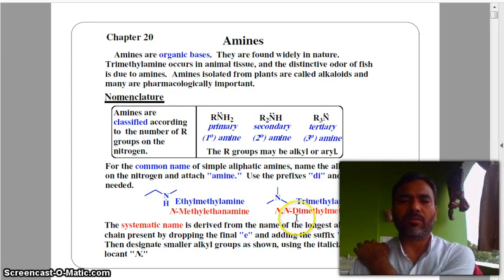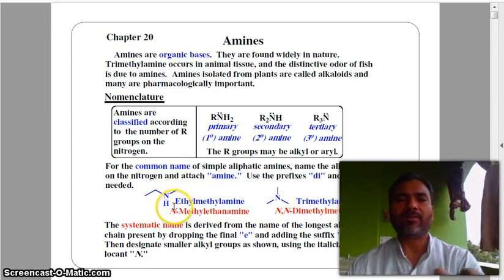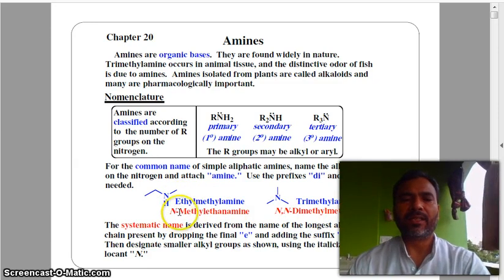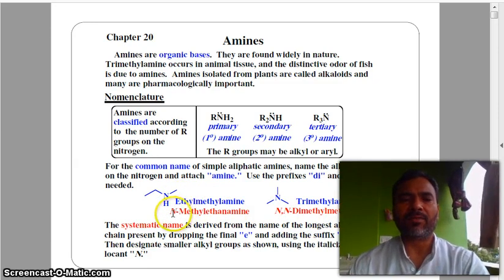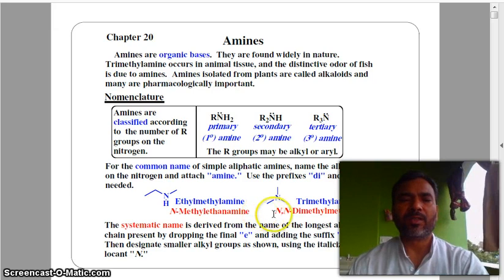If you have a secondary amine, then one N in italic form. If you have tertiary, then two N's should be there. If you have primary, no N. That's the notation.